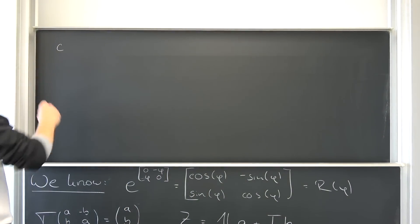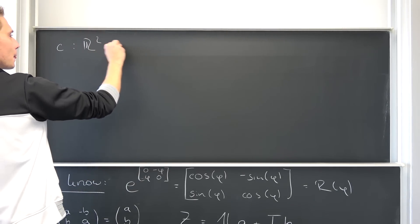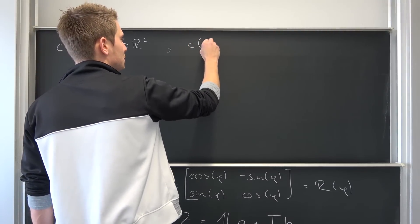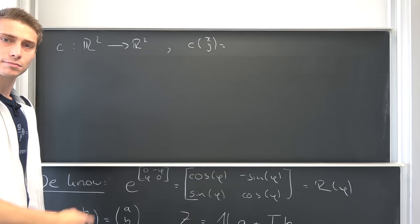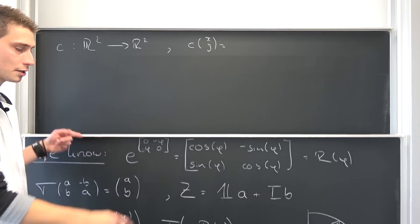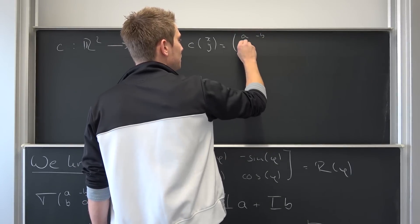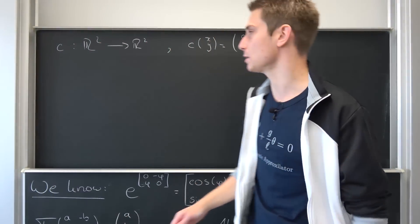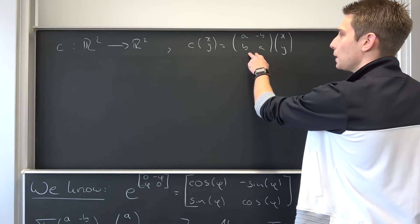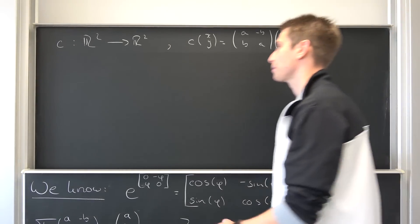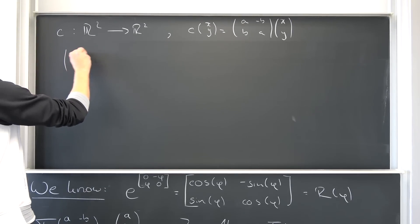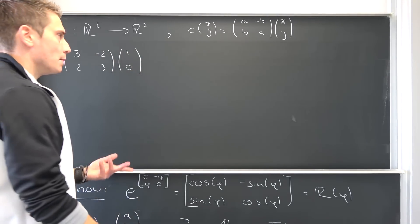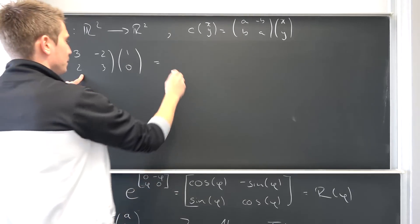Let us look at something else that may make this even clearer. We define a mapping c from R² to R², defined as c of some vector (x, y) using a complex number in matrix form: (a, -b; b, a) times (x, y). I will use a numerical example so you can see it better. What does our complex number do to a vector (x, y)? Let us say our complex number is (3, -2; 2, 3) and we choose the vector (1, 0). We can break this up into real and imaginary parts.